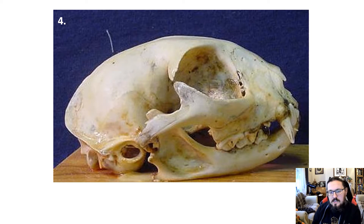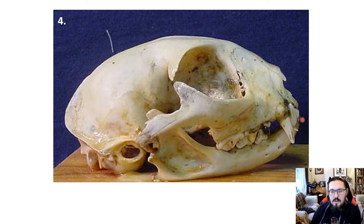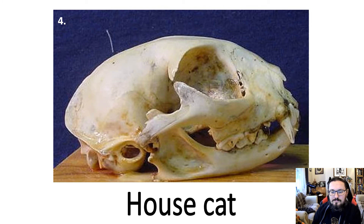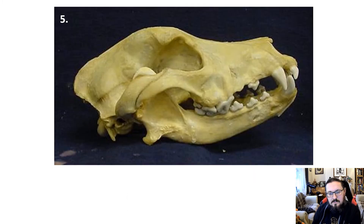Next is a pig — what a huge diastema. Then looking at this jaw: there's a larger region for muscle attachments, quite a large eye socket, big canines, and nice sharp carnassial teeth — that's our domestic cat, Felis domesticus.